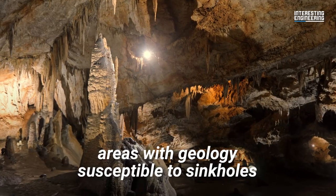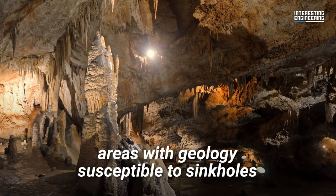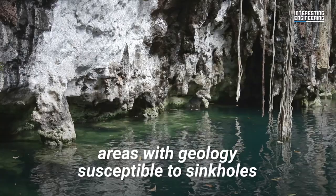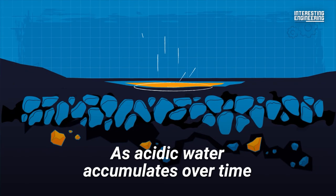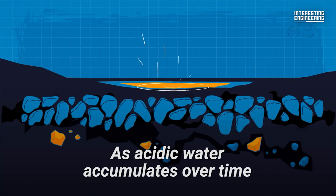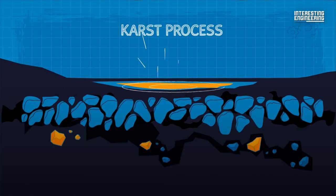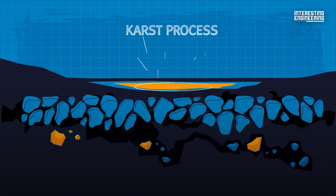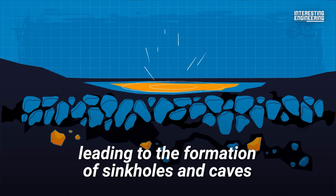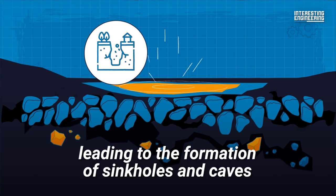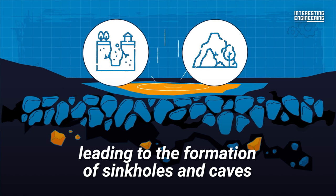As acidic water accumulates over time, the karst process begins, or the rock begins to dissolve, leading to the formation of sinkholes and caves.